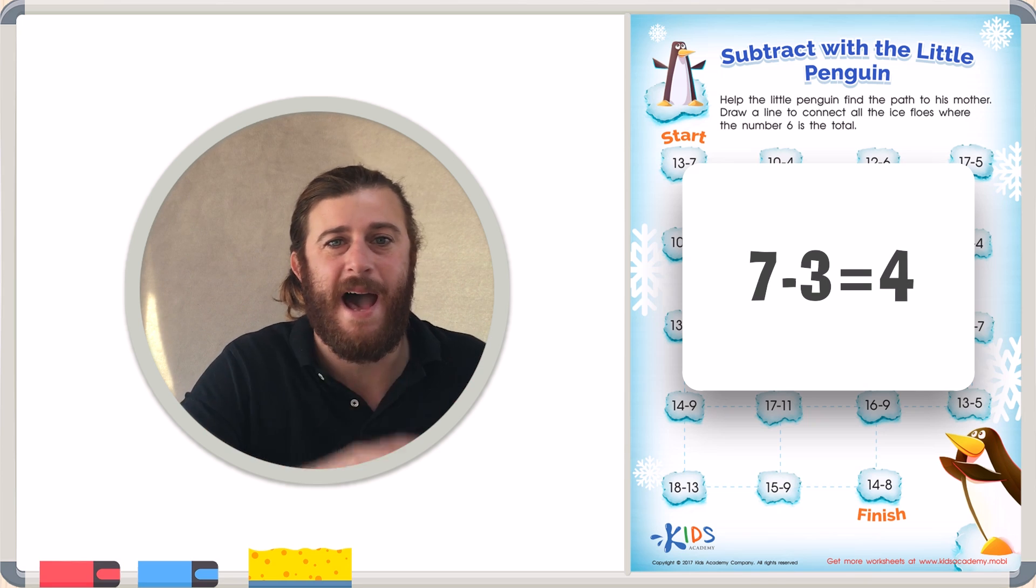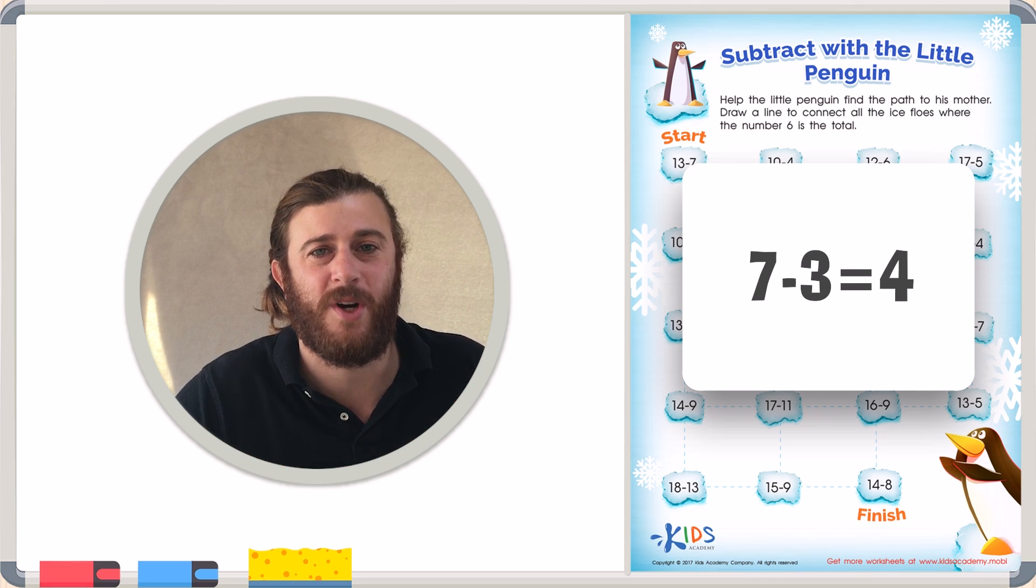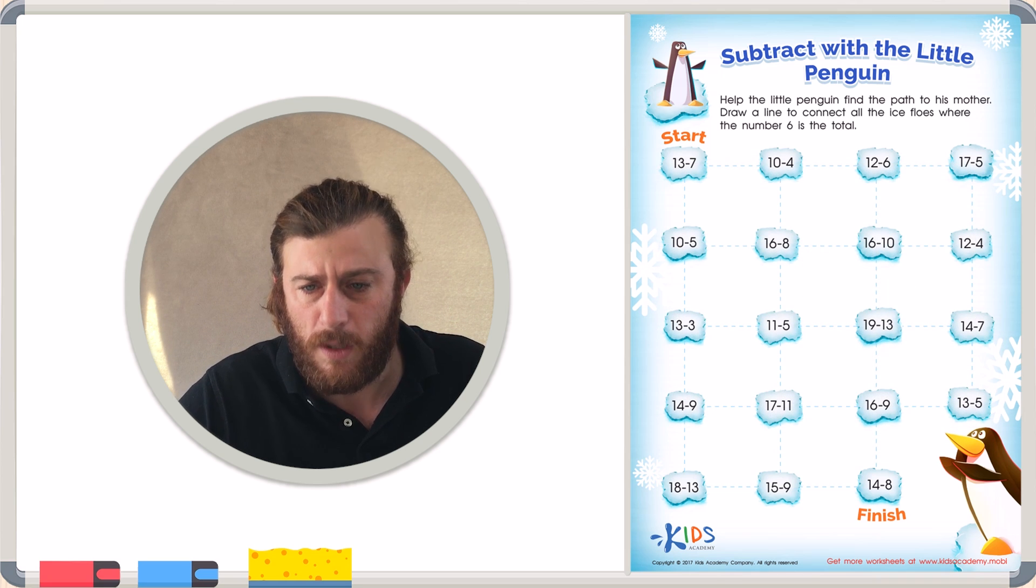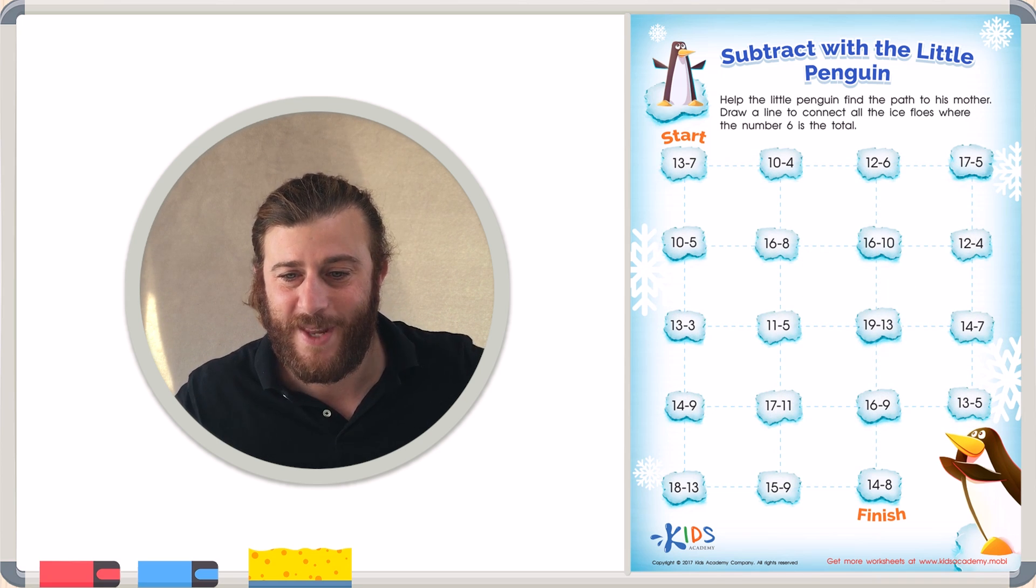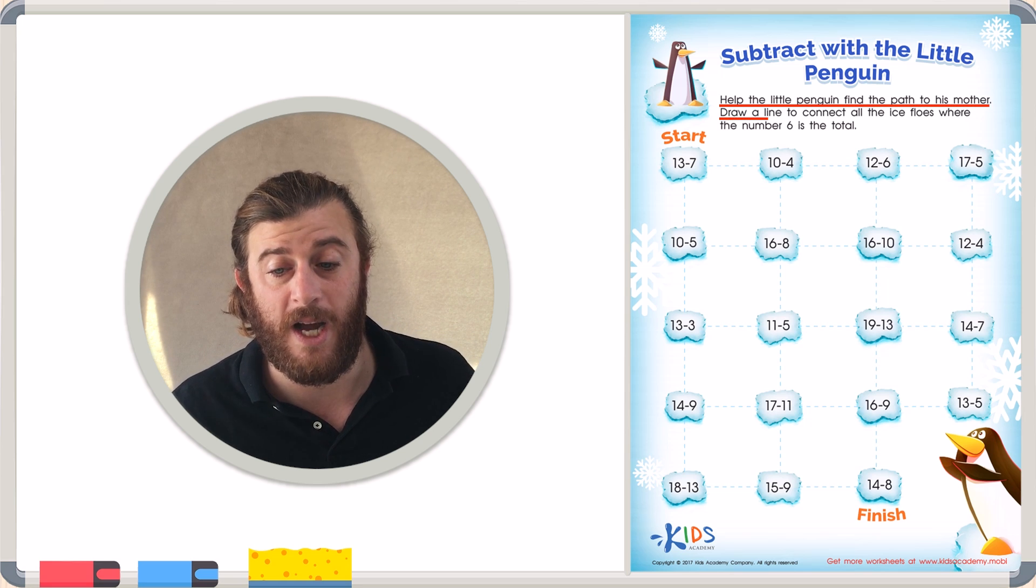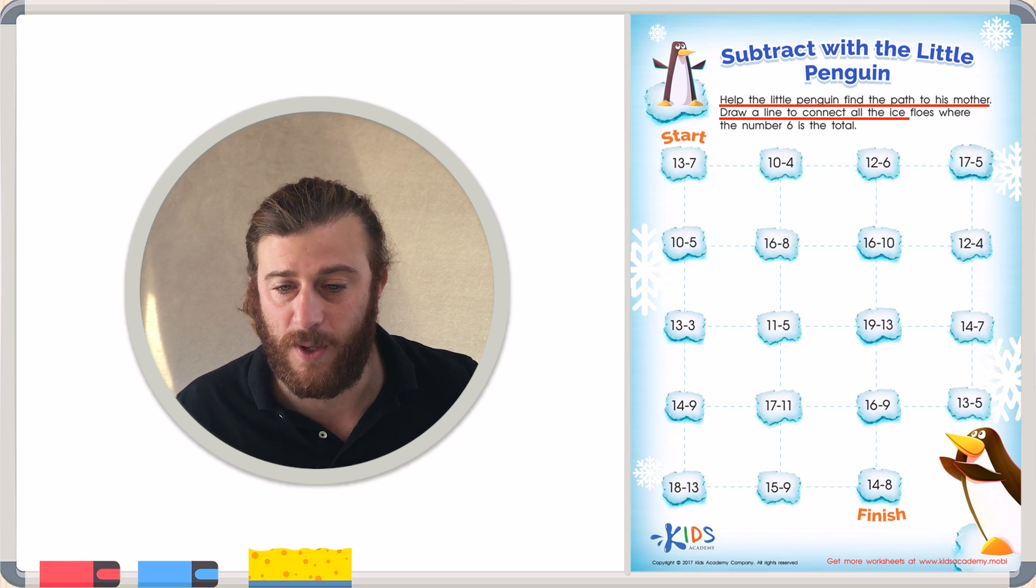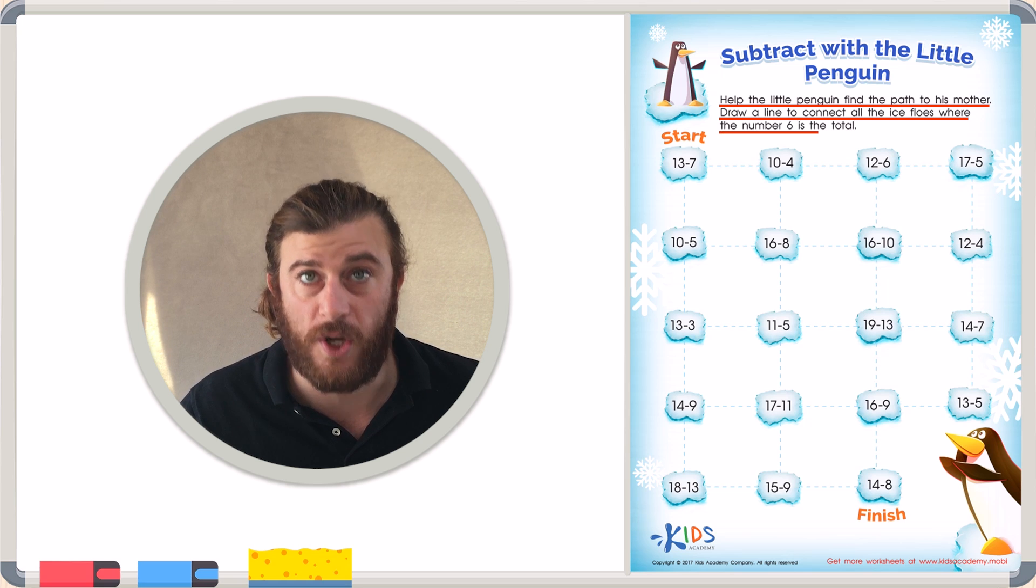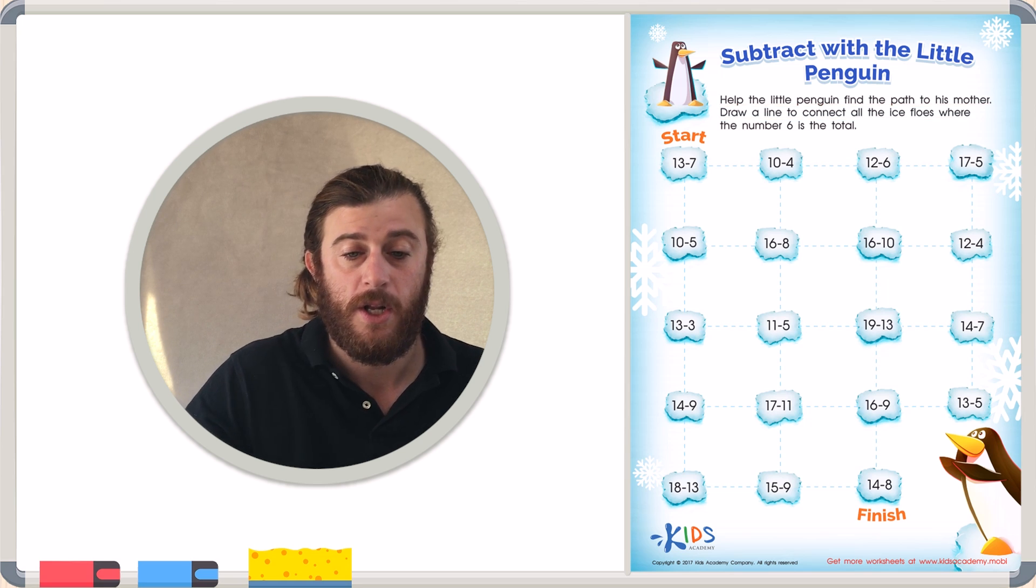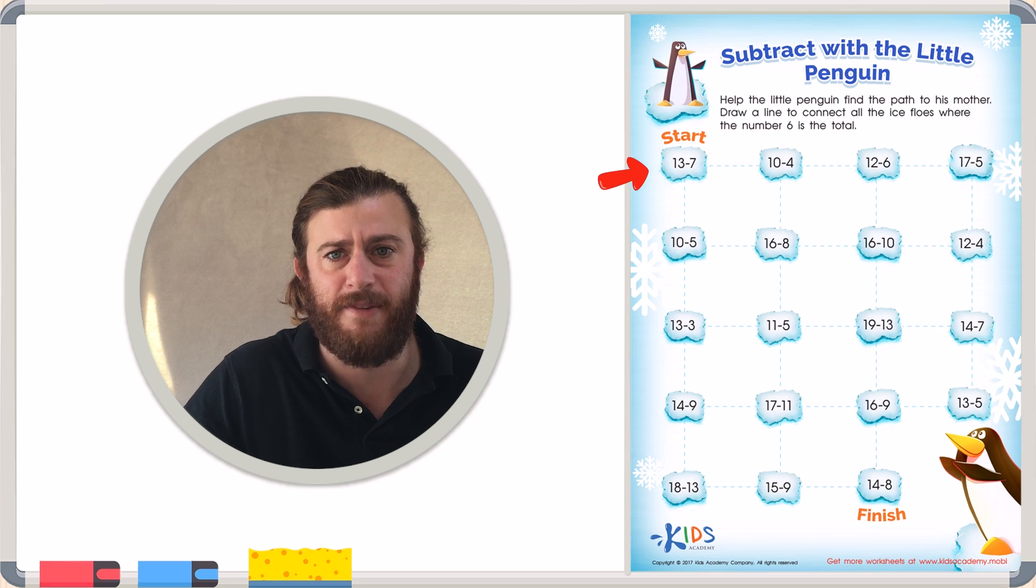Let's use this strategy of counting back to answer these questions on this worksheet. Let's read the directions and get started right away. Subtract with the little penguin. Help the little penguin find his path to his mother. Draw a line to connect all the ice flows where the number 6 is the total. Okay, I think we should start where it says start. So our first problem is 13 minus 7.